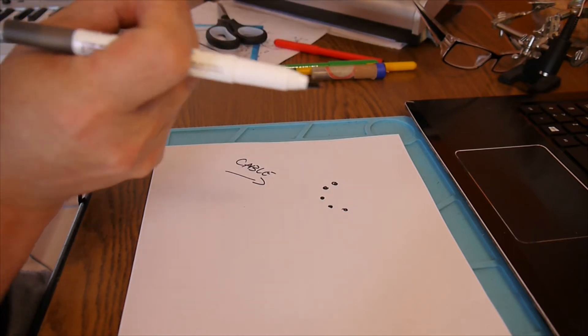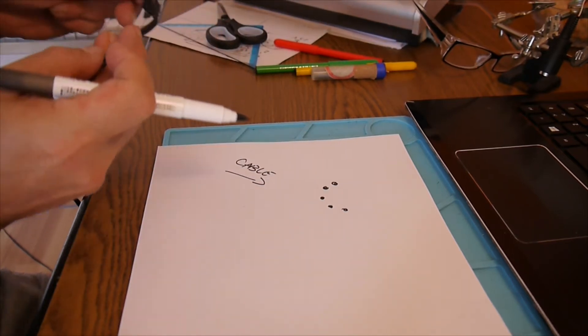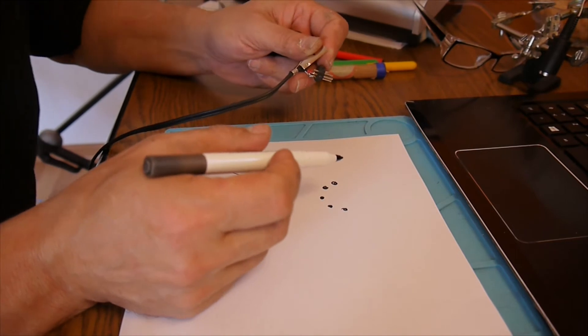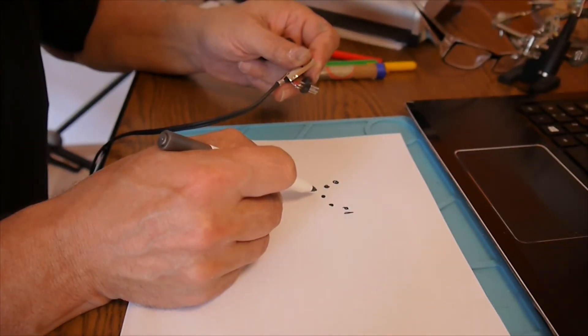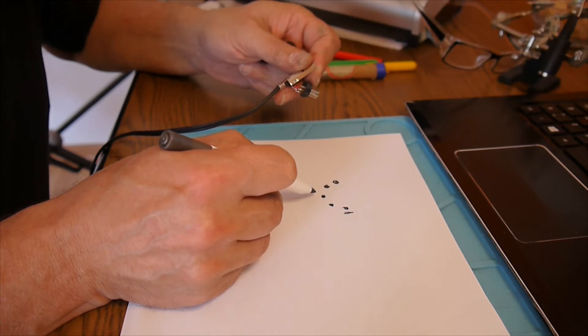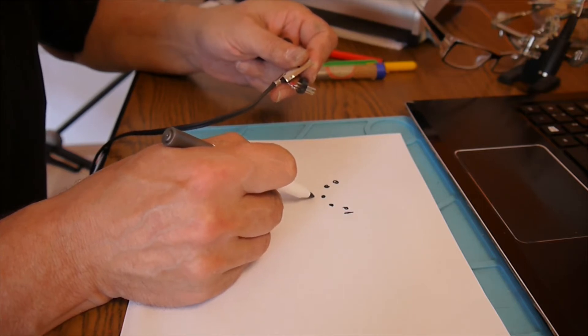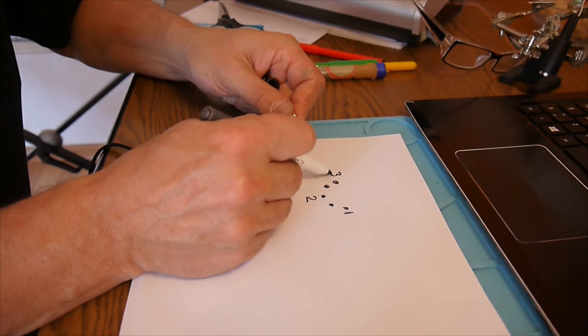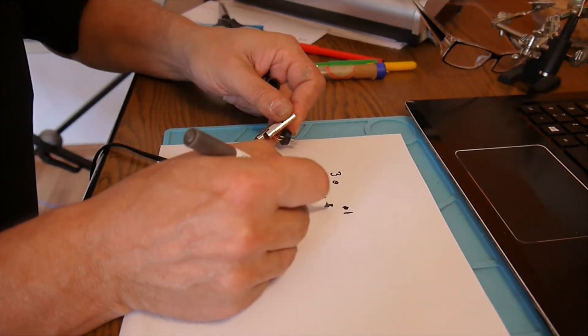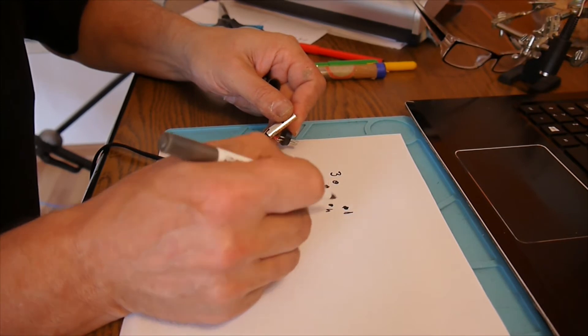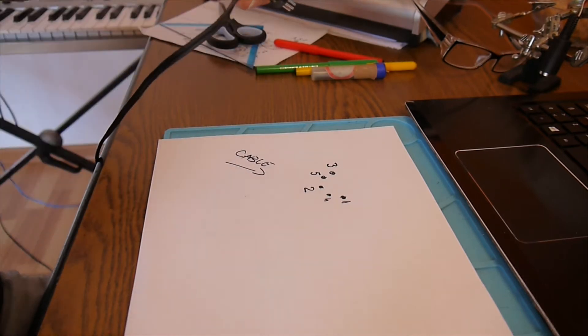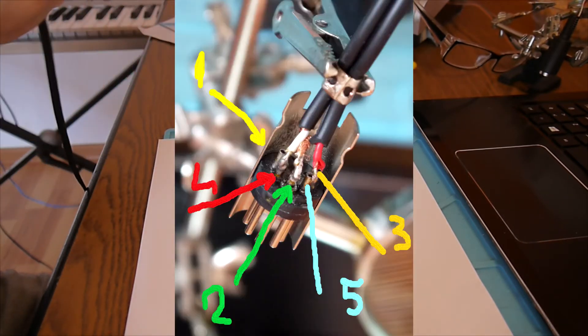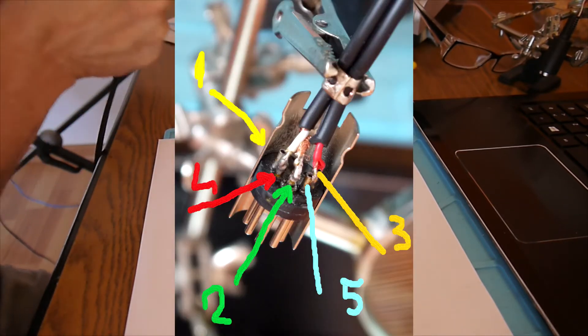So we have this look from the cable. Okay, there we are, you see. So we count this number one, and the screen or the ground is always number two, and here we have number three, and then we have number four here and number five here.